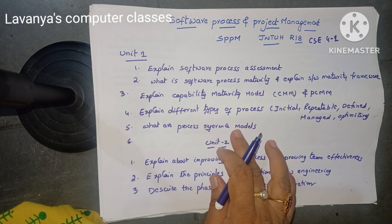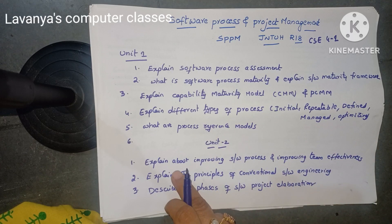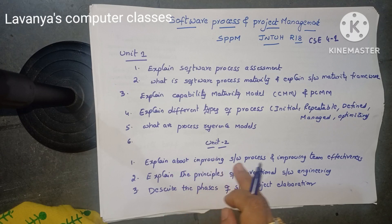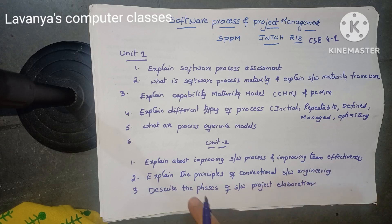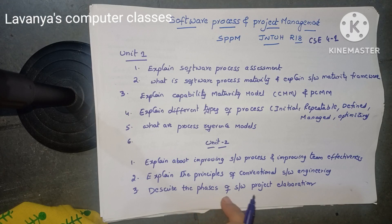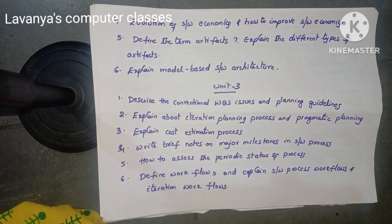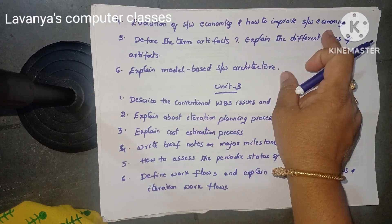Read all these questions and then we can easily answer Unit 1 questions. Then Unit 2: the questions are explain about improving software process and improving team effectiveness. Second question is: explain the principles of conventional software engineering. Important question — and describe the phases of software project elaboration.